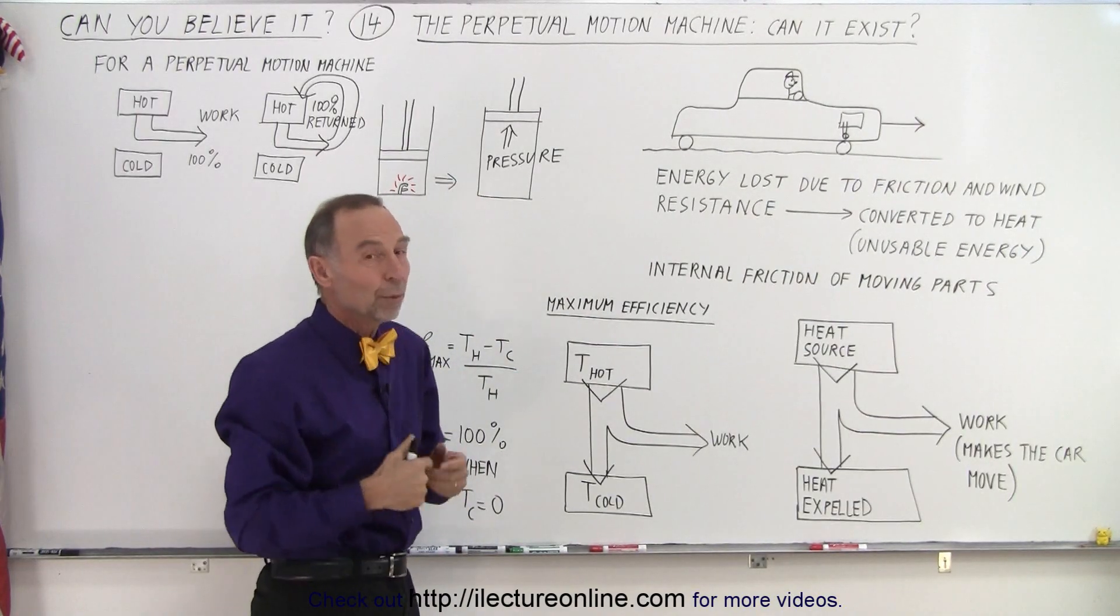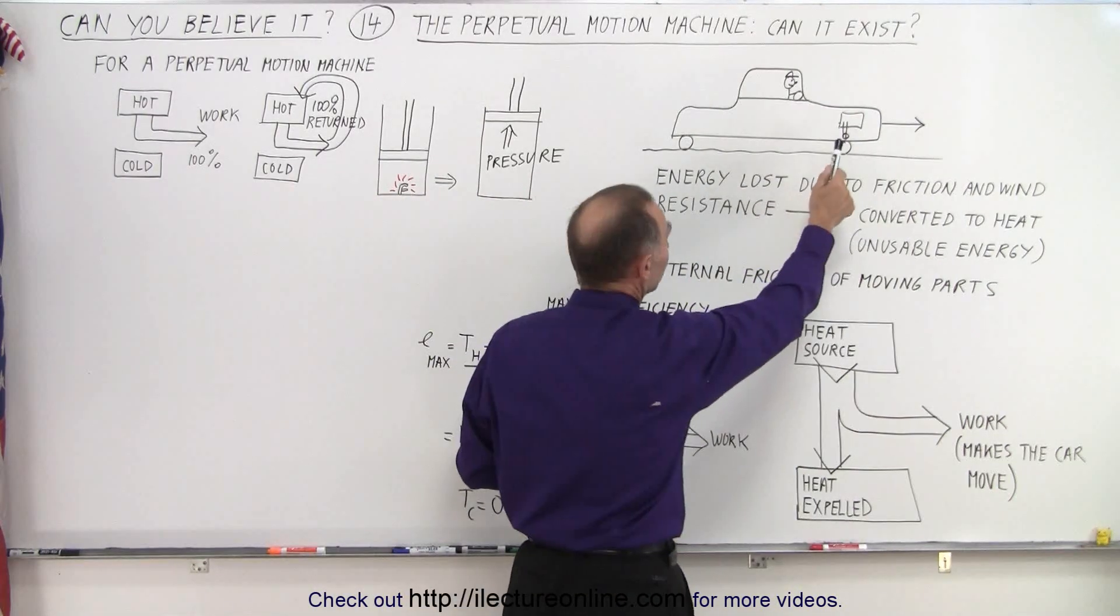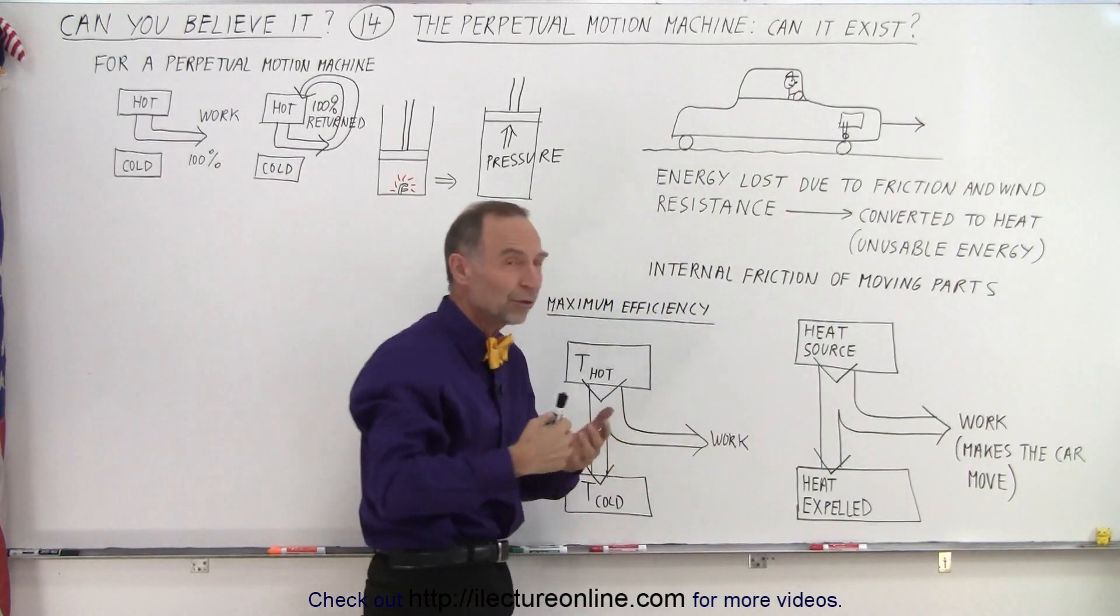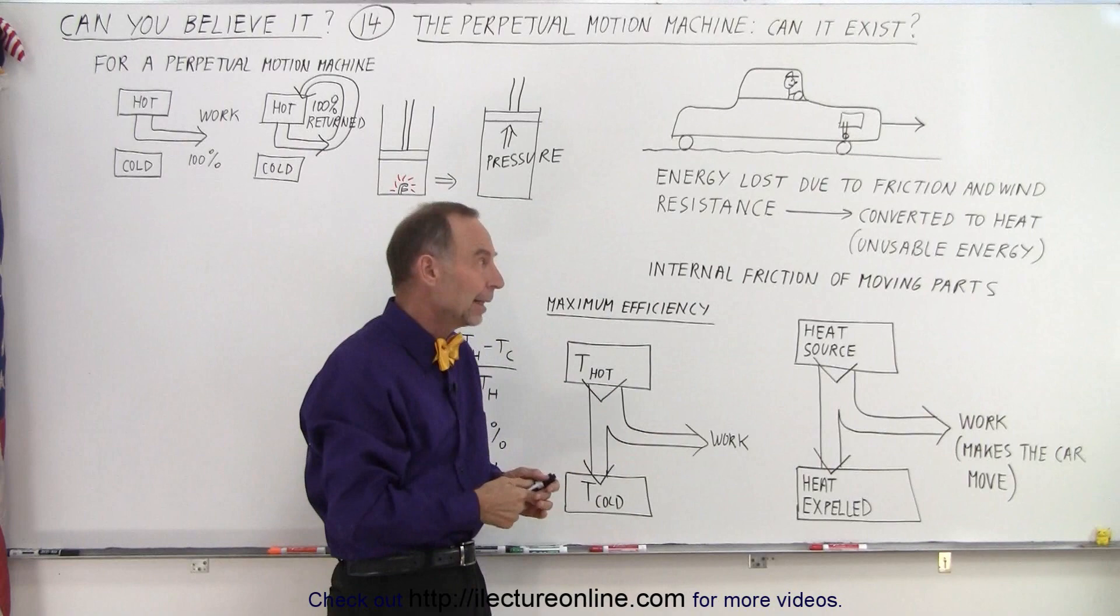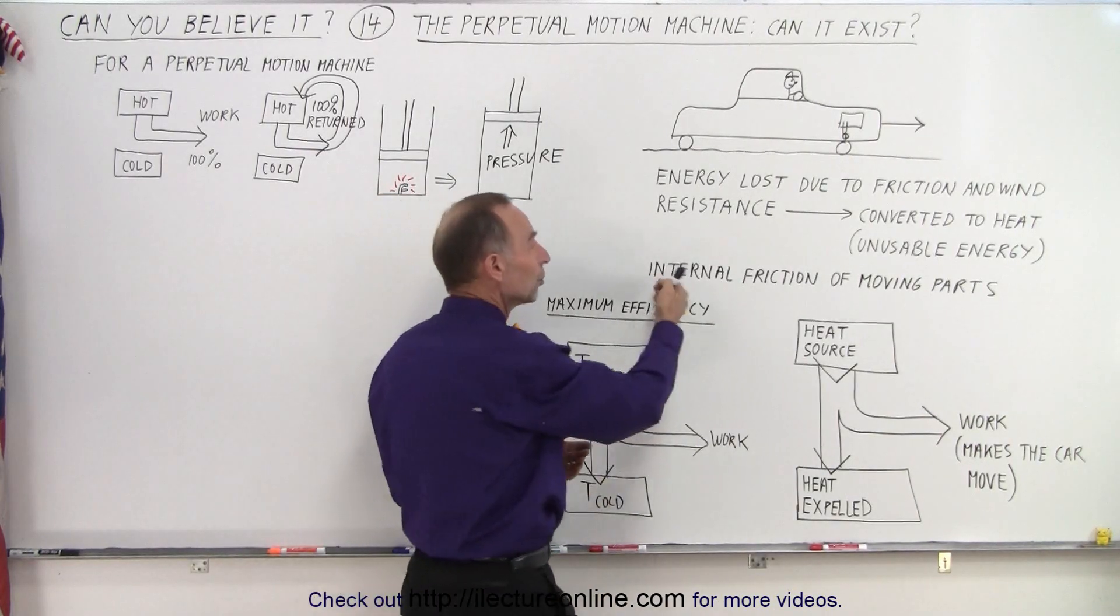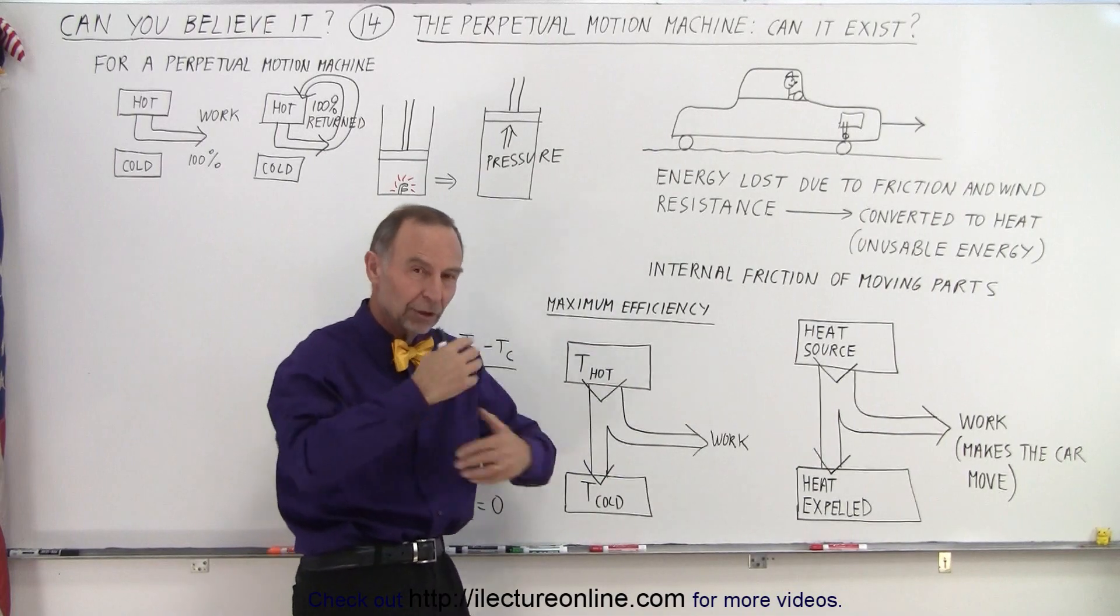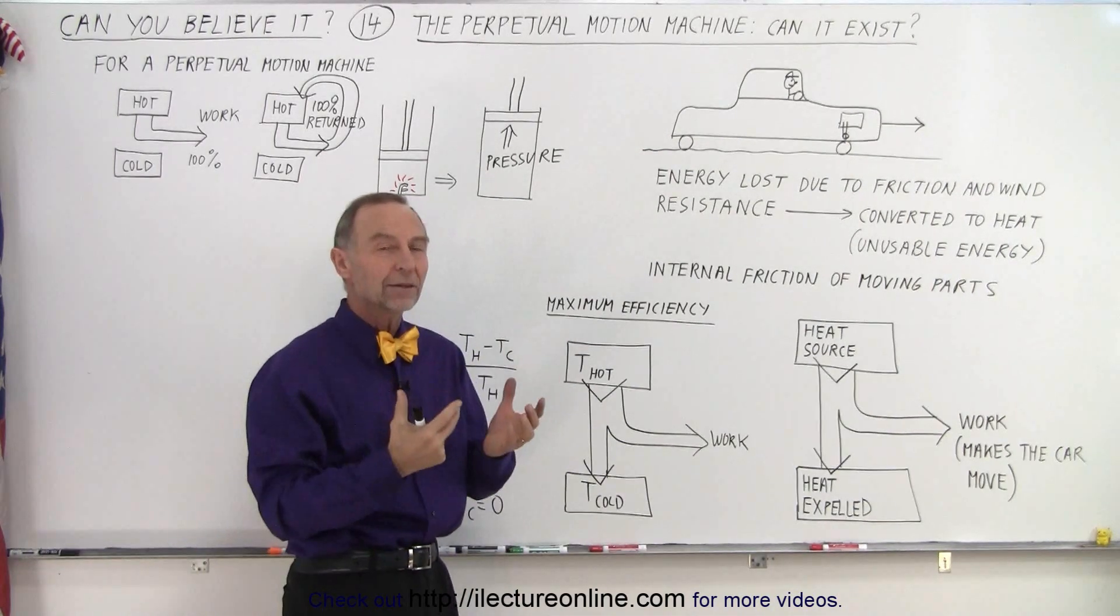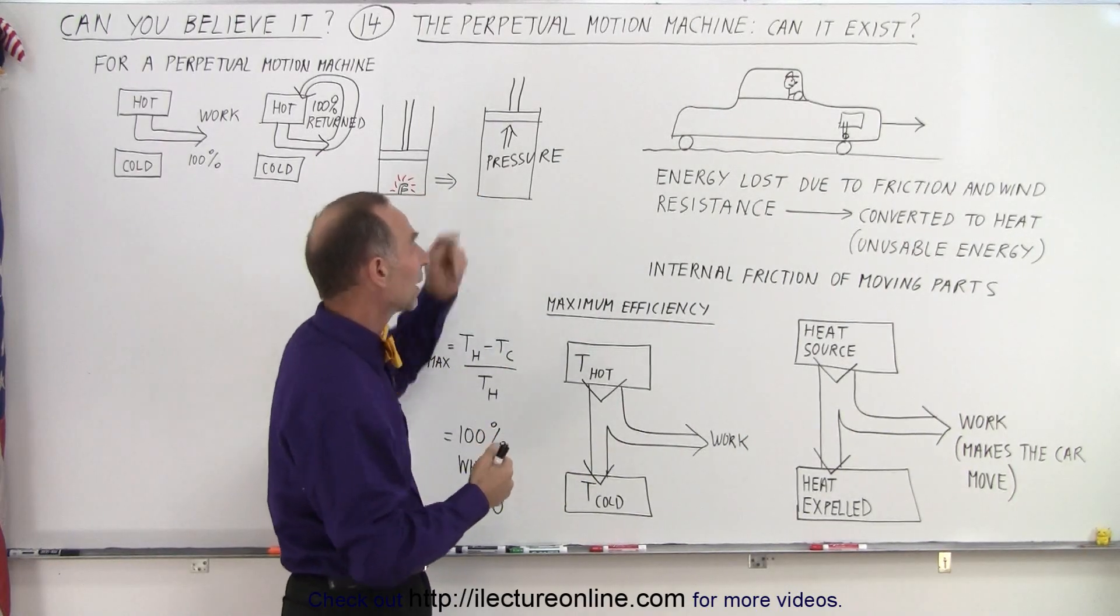Now, with all cars, we lose energy due to friction between the tires and the road, the rolling friction, the wind resistance, and that lost energy is converted to heat. In addition to that, we have internal friction of all the moving parts, the pistons moving, the wheels turning, everything turning inside the car, belts being driven. All that pulls more energy out of the total energy made available by this process.